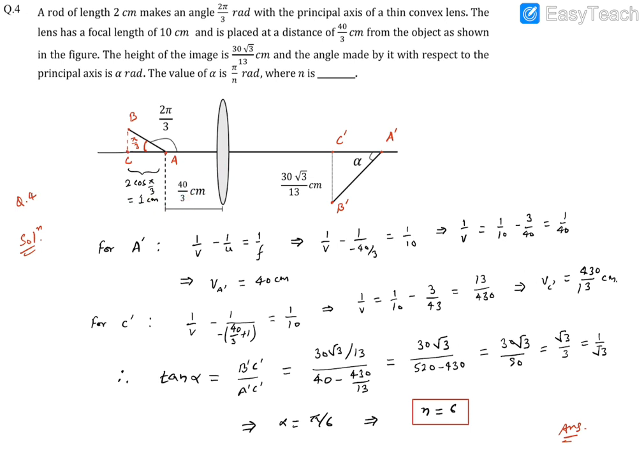For C', we write u = 40/3 + 1 and use the same equation again.